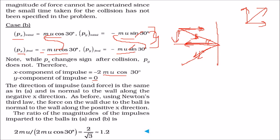So, the direction of impulse in this case is, as we saw, it will be normal to the wall along the negative x direction. And using the Newton third law, we will find out the force due to the ball, which is normal to the wall along positive x direction and the ratio of magnitudes will be.